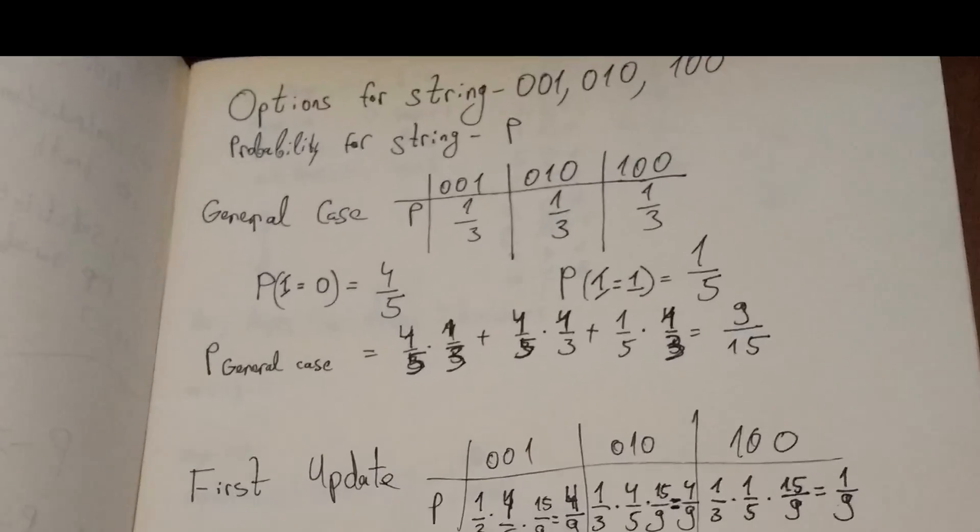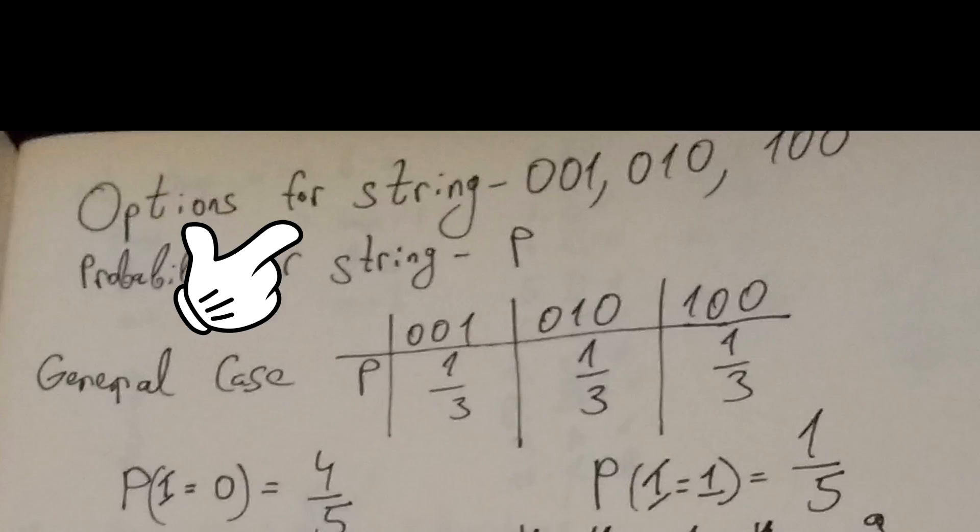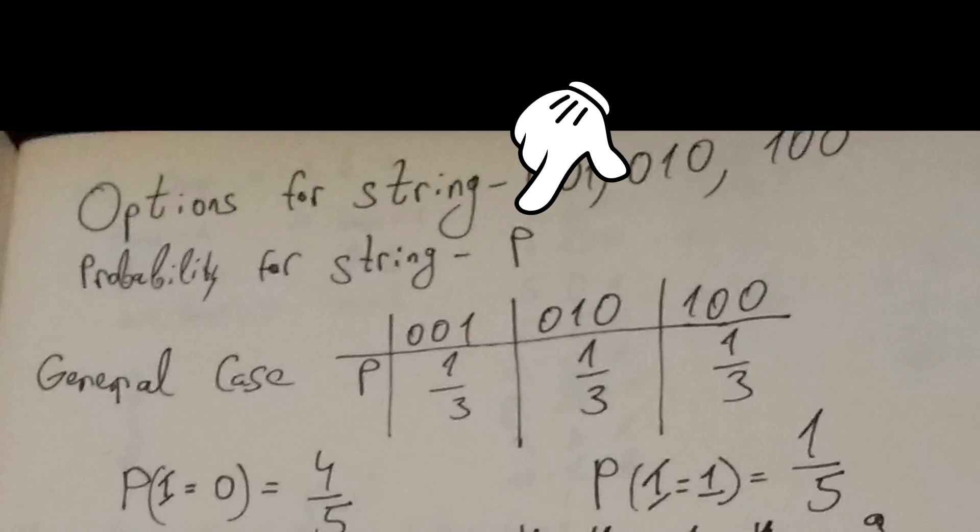So, first we have three possibilities for the string: 001, 010 or 100. I'll write the probability of having one of these three strings as P. Here's a table that shows P. The probability of 001 is one third, the probability of 010 is a third, and the probability of 100 is also a third. In other words, we assume that the three cases have an equal chance of happening.